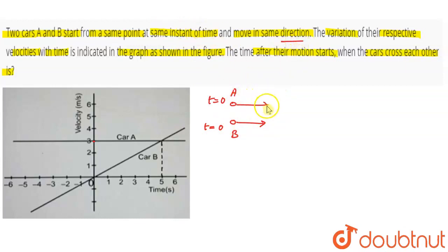Car A has constant velocity from initial time. Car B has initial velocity 0 and is constantly accelerating. This means car B is constantly accelerating. At some point, car A and car B will cross.